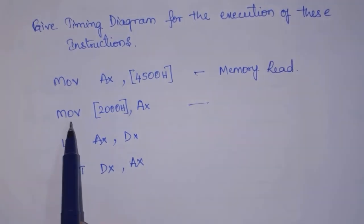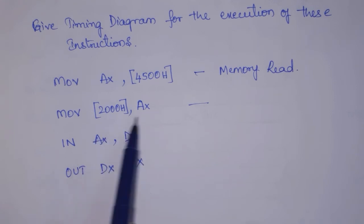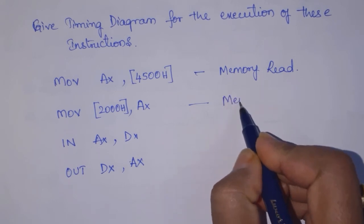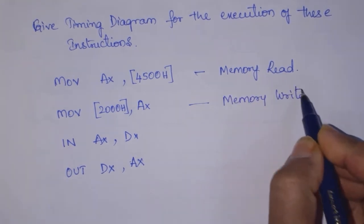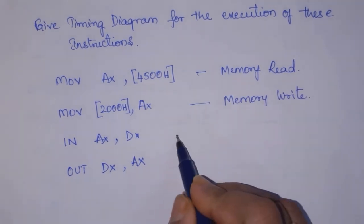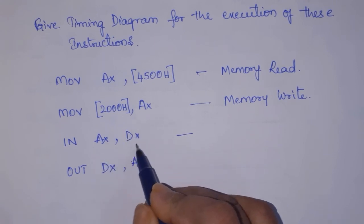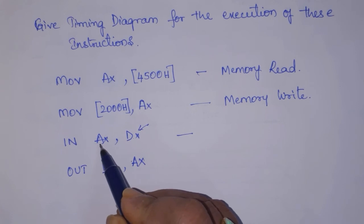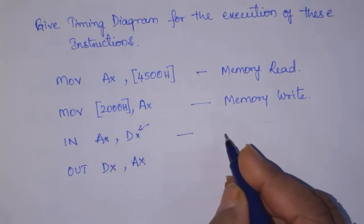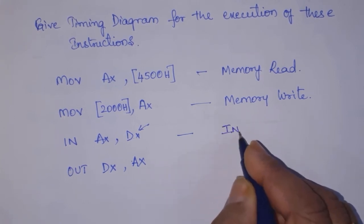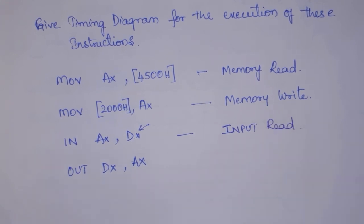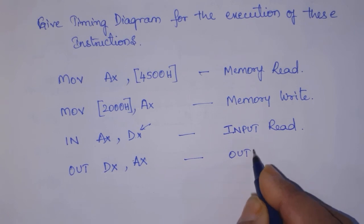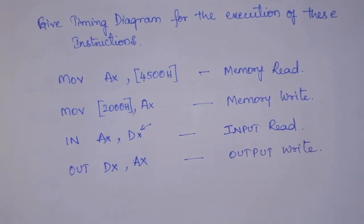For an instruction that moves from a register to memory — from processor to memory — that is a memory write machine cycle. In an instruction like IN AX, DX where DX holds the address of an input device, the processor must get the data from that input device to the AX register — that is an IO read cycle. And if the contents of AX register are to be sent to an output device, that is an IO write cycle.